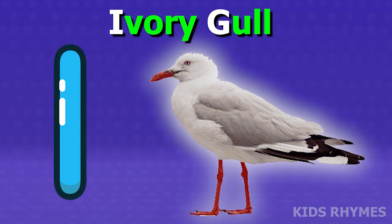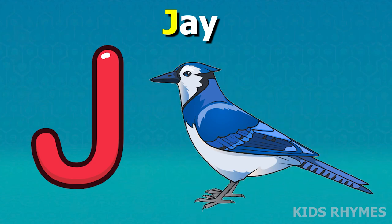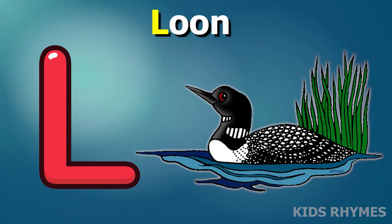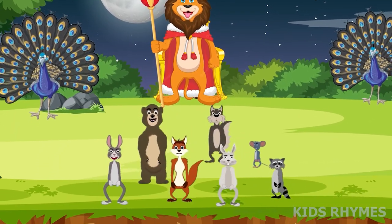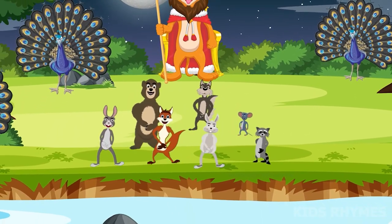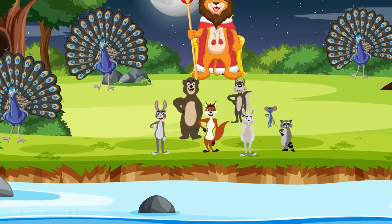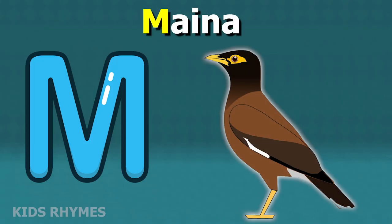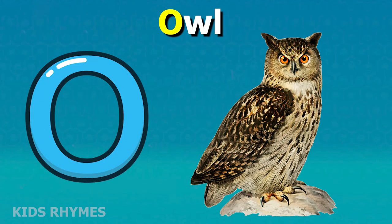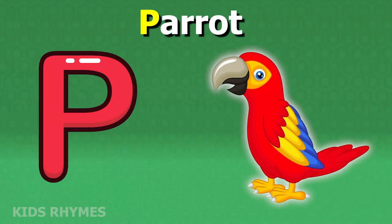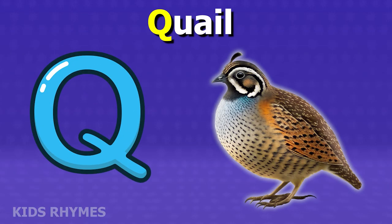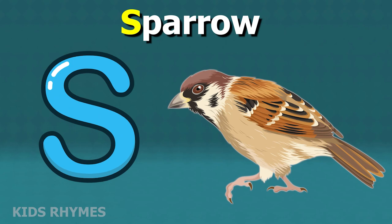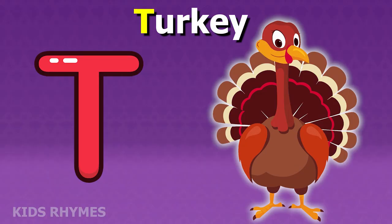I for ibis, J for jay, K for kingfisher, L for loon, M for myna, N for nightingale, O for owl, P for parrot, Q for quail, R for robin, S for sparrow, T for turkey.